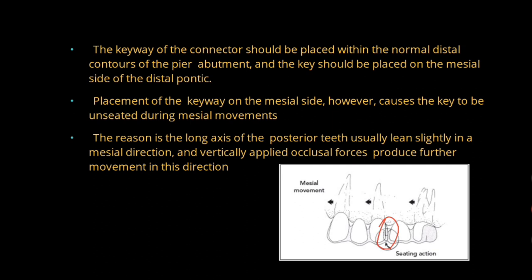Now, if the keyway is on the mesial side, it will cause unseating of the key. Why? Because usually in the posterior teeth, the long axis is leaning slightly in the mesial direction, and when occlusal forces are applied, it will cause mesial movement. So that is what leads to the unseating of the key.